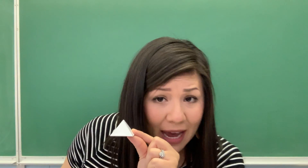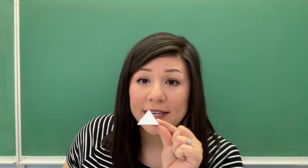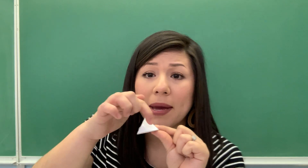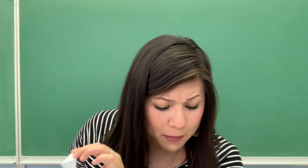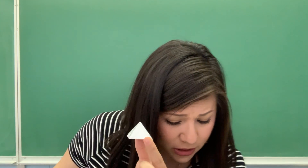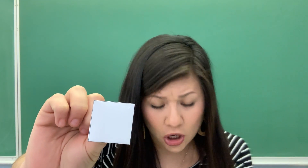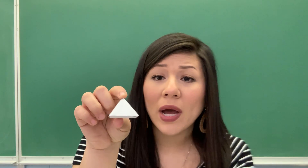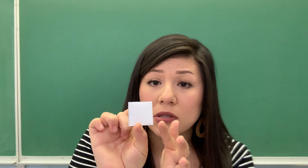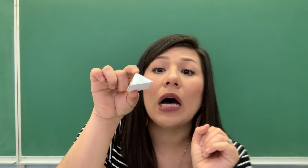Does this pyramid have any parallel faces? No, it doesn't. The faces are not parallel — they meet at the middle, and there's nothing parallel to the base. Does this pyramid have any parallel or perpendicular edges? The opposite edges of the square base are parallel, and adjacent edges are perpendicular. In the pyramid, what types of angles are formed by the intersecting edges? We see acute angles at the top, and on the bottom base we see right angles. So this pyramid is formed by acute angles and right angles.